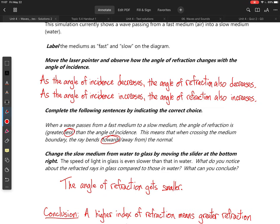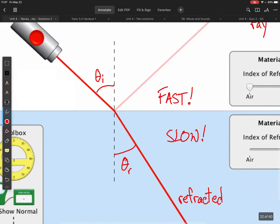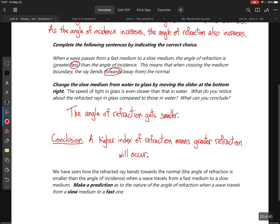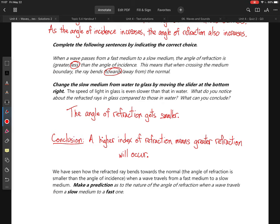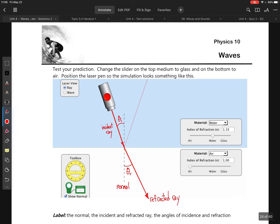So when a wave passes from a fast medium to a slow medium, the angle of refraction is less than the angle of incidence. So that means that when crossing the medium boundary, the rays bend toward the normal. And so you can see that here on the diagram. So the angle of refraction is less than the angle of incidence. So we then change the slow medium from water to glass by moving the slider and the speed of light in glass is slower than that in water. So what do we see here? The angle of refraction gets smaller. So measured against the normal, our angle gets even smaller. So what that means is we have more refraction. So our conclusion then is that a higher index of refraction means a greater refraction will occur.